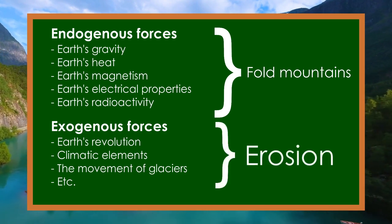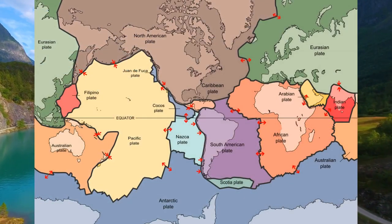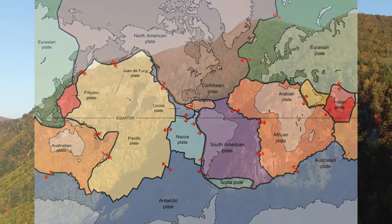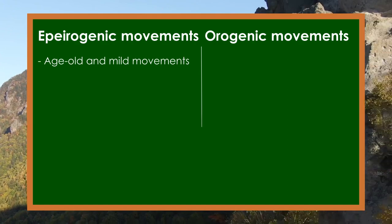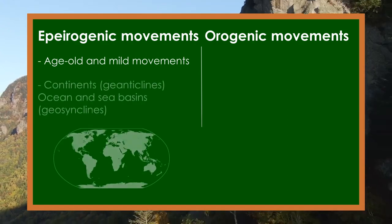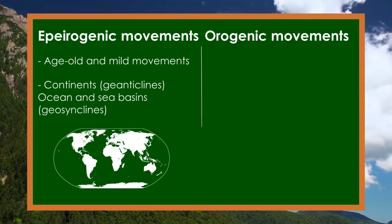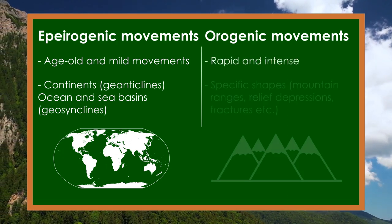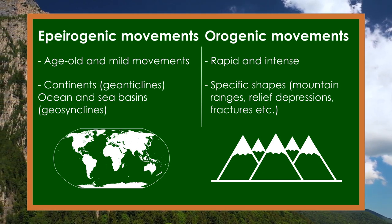It is important to note that the lithosphere is fractured into several tectonic plates, whose mutual relationship leads to significant changes in relief. Changes like this are called epirogenic and orogenic movements. Epirogenic movements are age-old and mild movements which have created continents, which we call geanticlines, and ocean and sea basins, which we call geosynclines. Orogenic movements are rapid and intense, and they create specific shapes on the Earth's surface, such as mountain ranges, relief depressions, fractures, and so on.